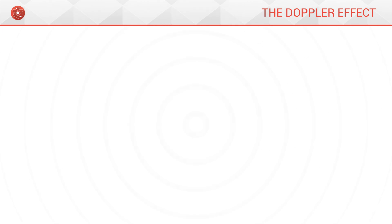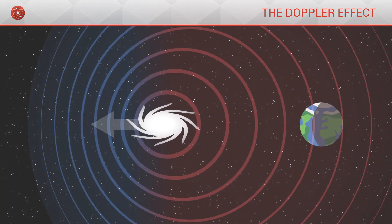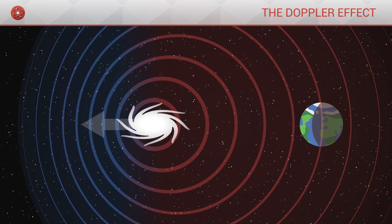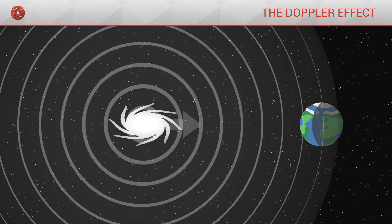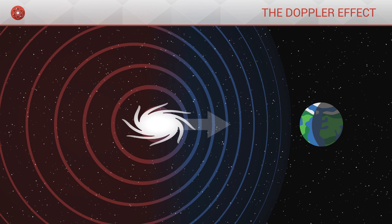For this reason, when a galaxy moves away from us, we see it as slightly more red, and when it moves closer to us, we see it as slightly more blue.